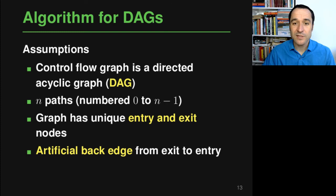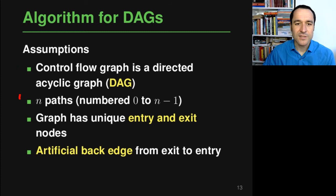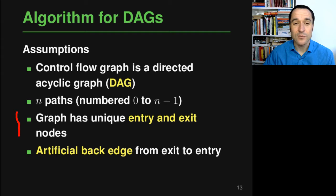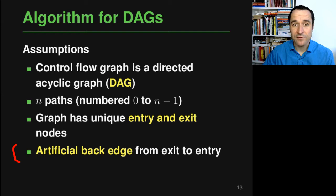First, the algorithm is explained only for DAGs — directed acyclic graphs — and we'll see later how to lift that restriction. Second, we assume there are n paths through the graph numbered from 0 to n-1. Third, the graph has a unique entry and exit node — an easy assumption to fulfill since we can always add extra entry or exit nodes if needed. Finally, we assume an artificial back edge from the exit node to the entry node, which technically breaks the acyclicity assumption but is treated as a special exception.